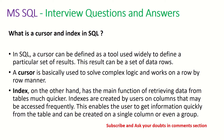What is a cursor and what is an index in SQL? A cursor can be defined as a tool widely used to define a particular set of results — this result can be a set of data rows. A cursor is used to solve complex logic and works in a row-by-row manner. An index, on the other hand, has the main function of retrieving data from tables much quicker. Indexes are created by users on columns that are accessed frequently. They can be created on a single column or even a group of columns. Examples include unique key, foreign key, and primary key — making data retrieval faster.